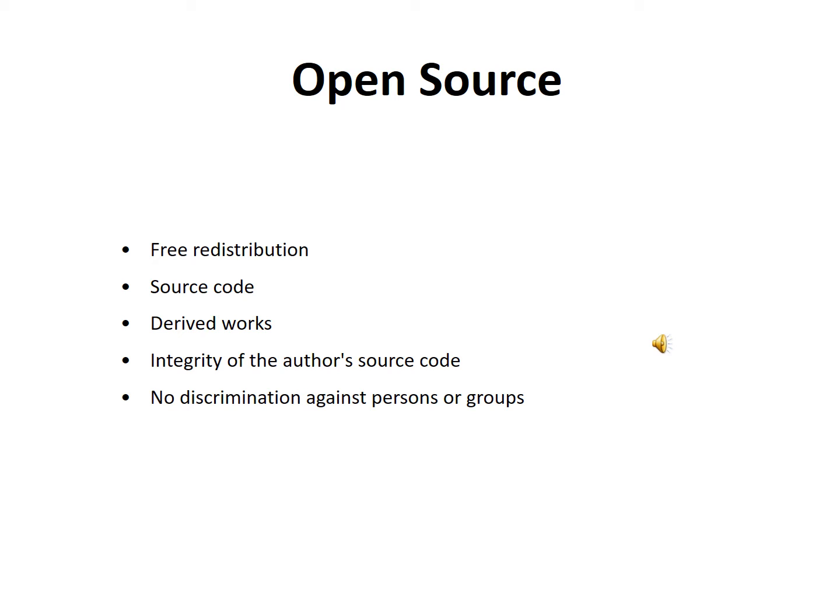Features of open source software include free distribution, and the software may include derivative works, not just the original work. There is also integrity of the original source and no discrimination against any person or group. Everybody must be able to utilize the open source software.